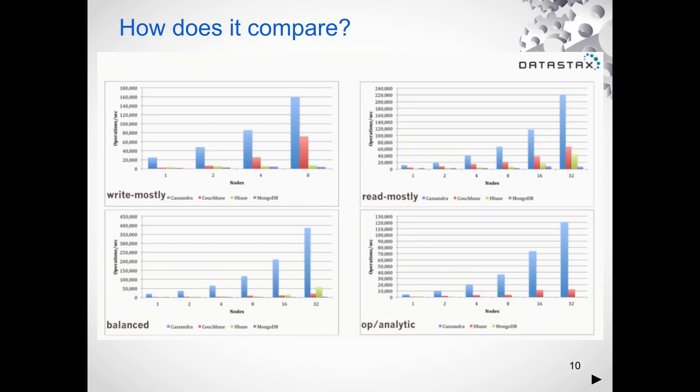It is very specific to the use cases you are looking to implement. In some use cases, MongoDB will be absolutely the perfect choice. In other cases, Cassandra will be the right choice. When looking at benchmarking, you have to keep the use case in mind and arrive at the right selection of technology.